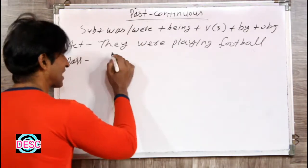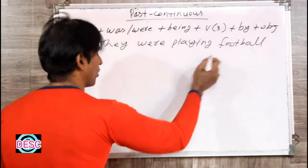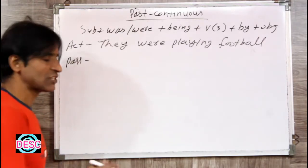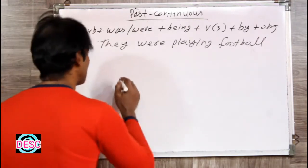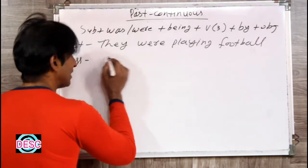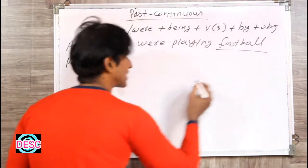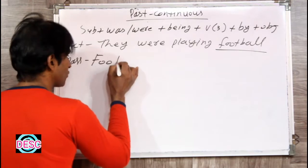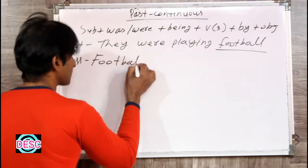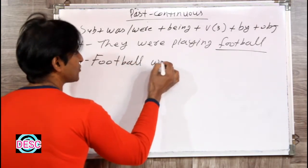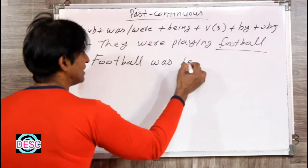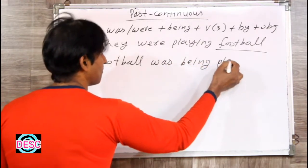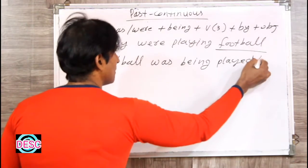Yahan par ek sentence likha hai: 'They were playing football.' This is the active sentence. Iska hum passive banayenge. 'Football' is the object here in this sentence — football ho jayega hamara subject. So the passive becomes: Football was being played by them.